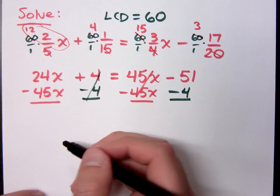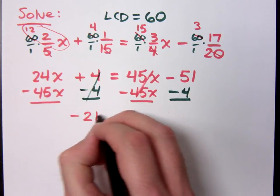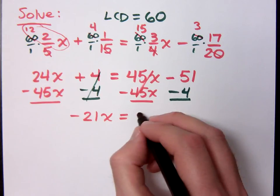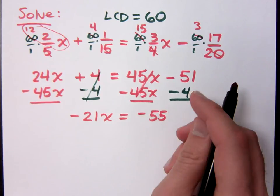So what's 24 minus 45x? Negative 21x. Negative 21x equals what? Negative 55. Negative is all over the place. You know what? I'm feeling pretty negative myself.